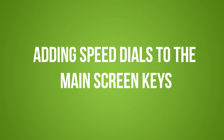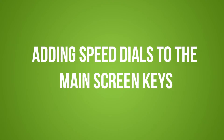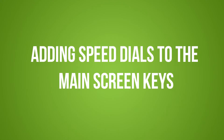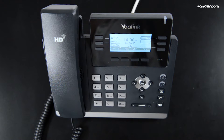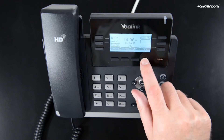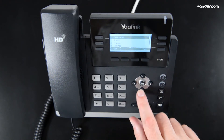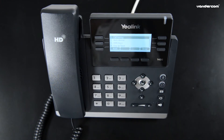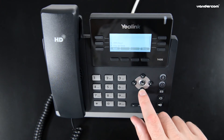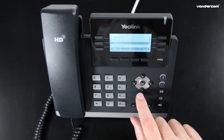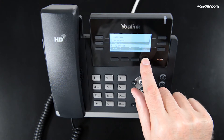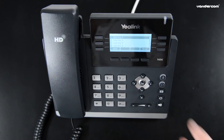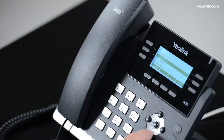Adding speed dials to the main screen keys. Press the menu soft key, then Features. Scroll using the down arrow key to DSS keys, or press number 3, and press Enter or OK.